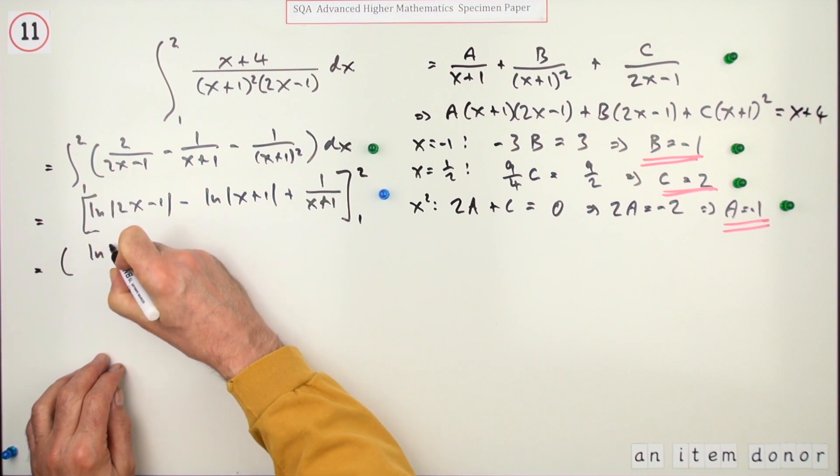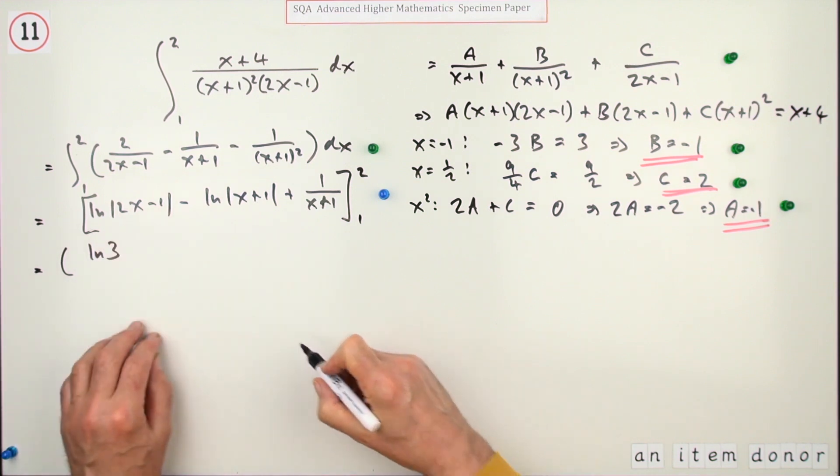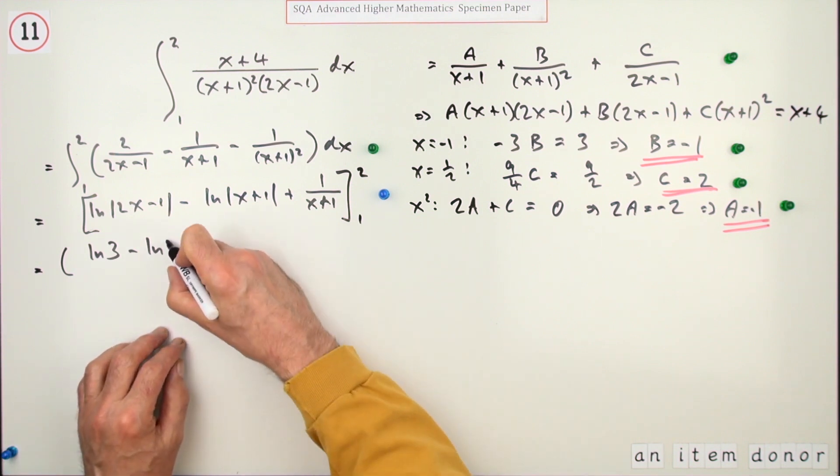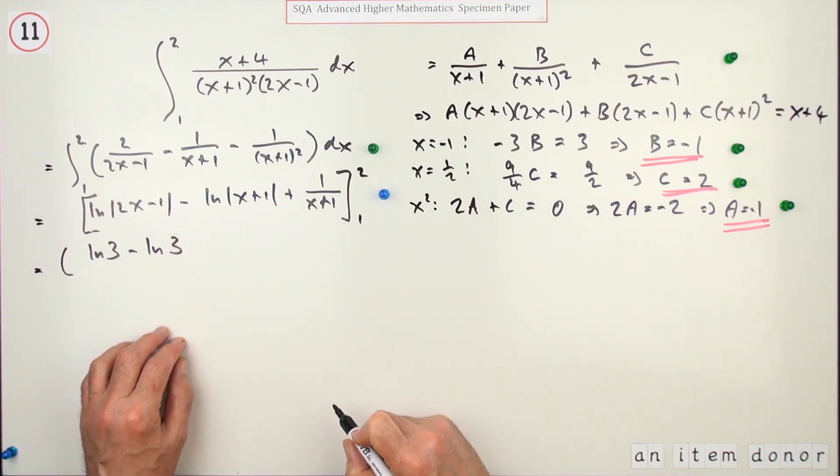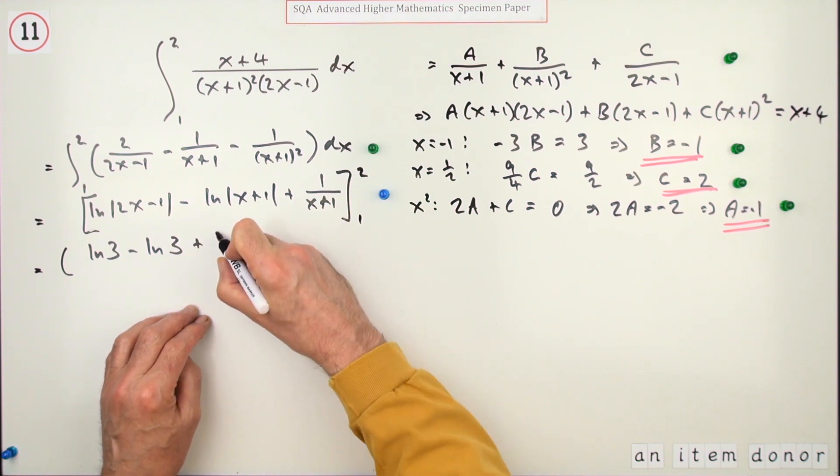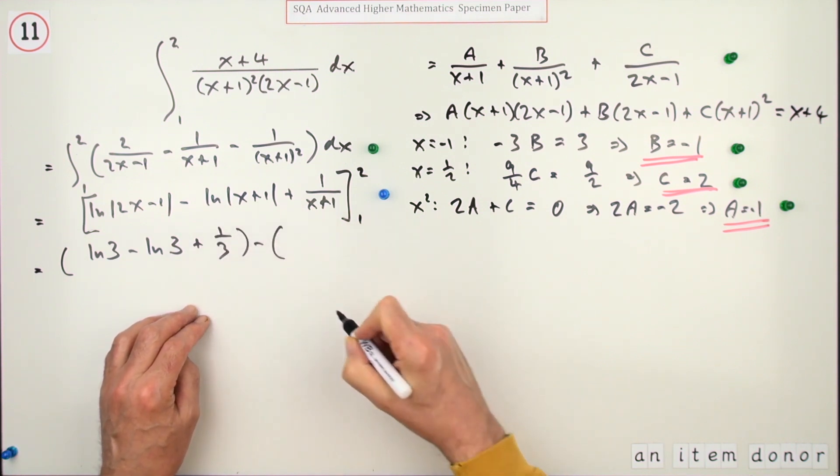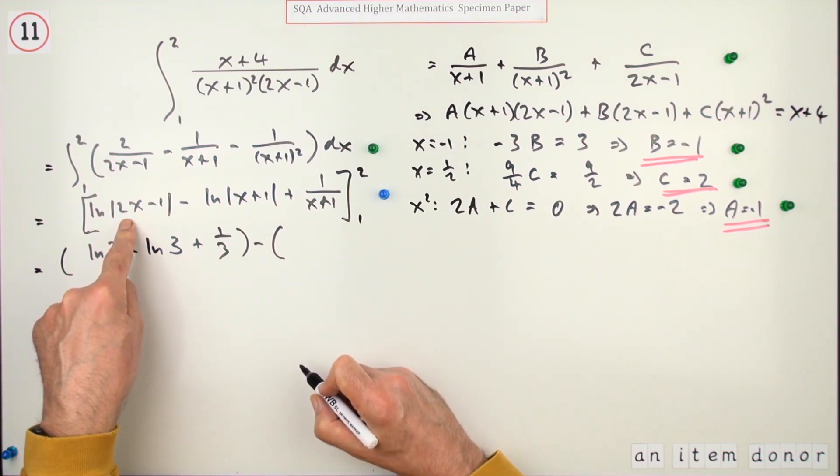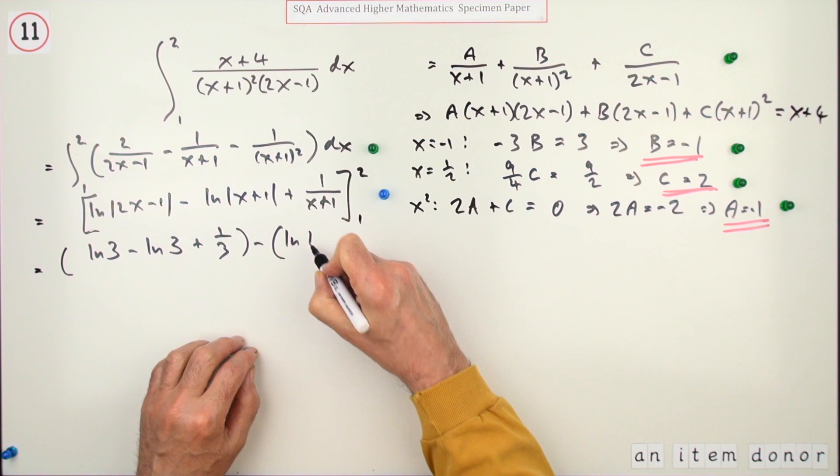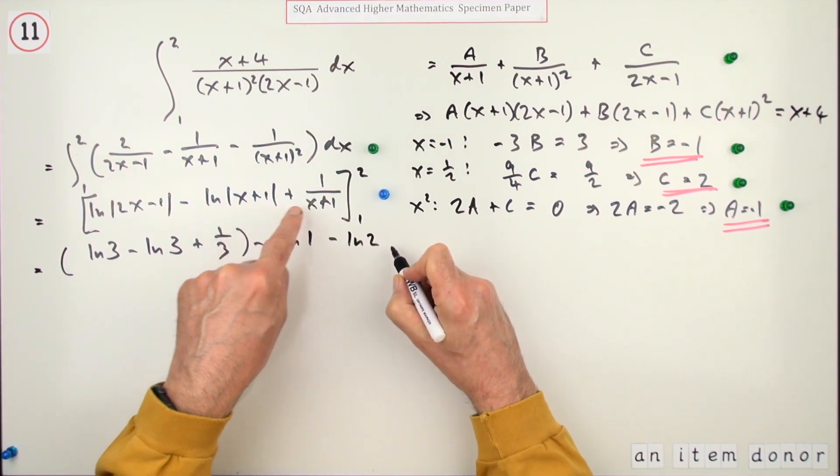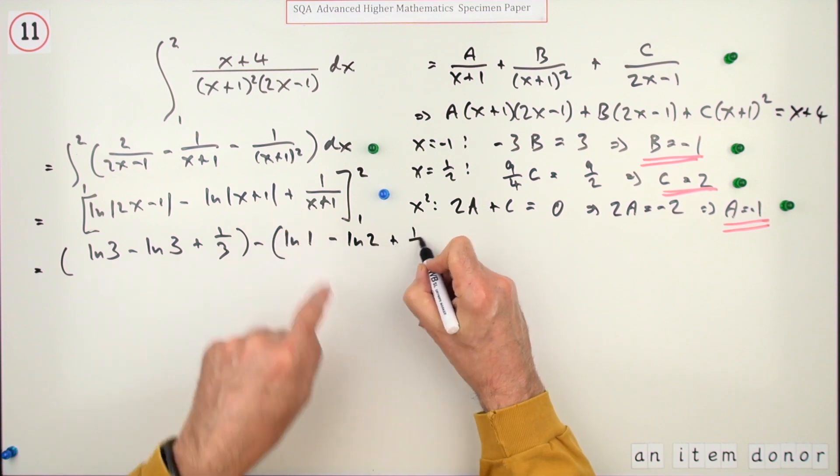Putting a 2 into this, 2 times 2 is 4, that's log 3, so I can just write that as log 3. That's -ln 2, and 1 is 3. So that's log 3 + 1/3 from that. I'm going to subtract: putting 1 in, so 2 times 1 take away 1 is log 1, -ln 2, and that part is 1 over 2, plus 1/2.